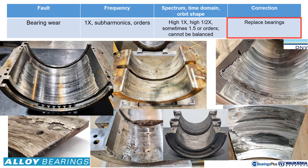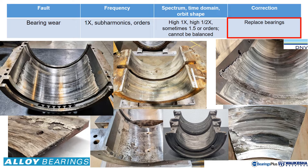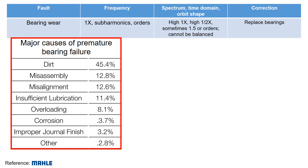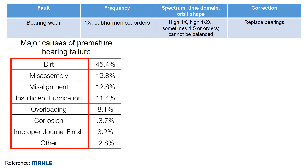As you could imagine, the corrective action for bearing wear is to replace the bearings. Here is an example of various types of bearing wear. Some wear can be refurbished. It is important to understand what's behind the premature bearing failure and wear.